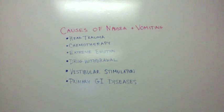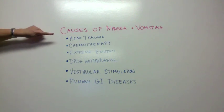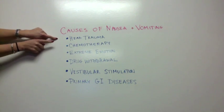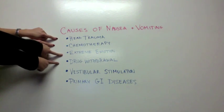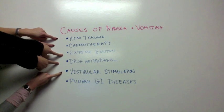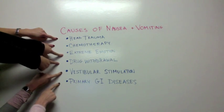Next, we will discuss the causes of nausea and vomiting. Nausea and vomiting are seen with multiple conditions such as head trauma, chemotherapy, extreme emotion, drug withdrawal, vestibular stimulation, and several primary gastrointestinal diseases.